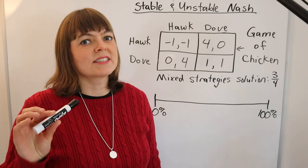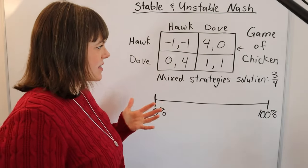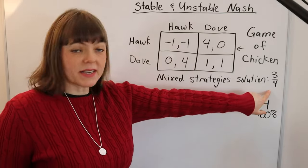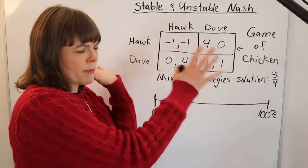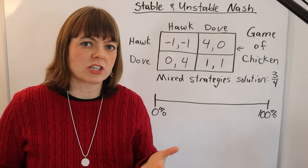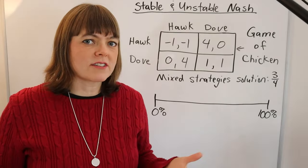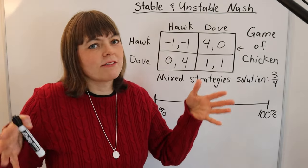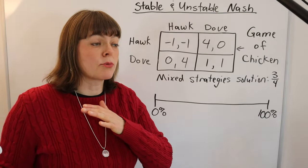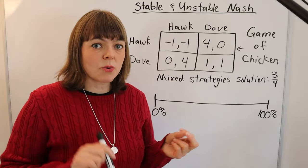I would like to explain evolutionarily stable and unstable Nash equilibrium. The context here is a situation where you have a game with a mixed strategies solution, where the optimal solution is that you mix back and forth between two different strategies. That game is embedded in an evolutionary context where the population could evolve in one direction or another depending on the Nash equilibrium and random variation away from it.